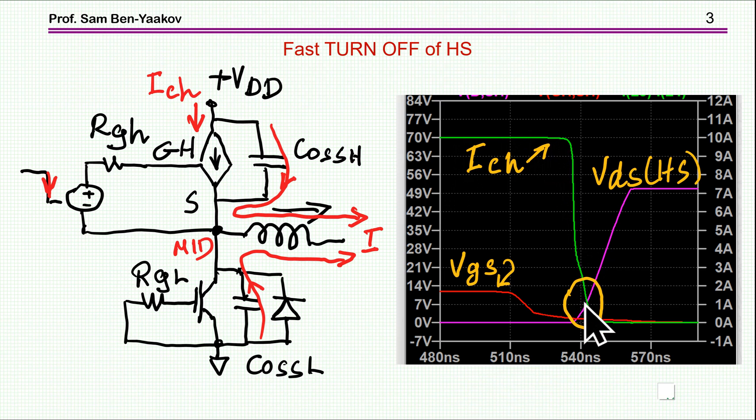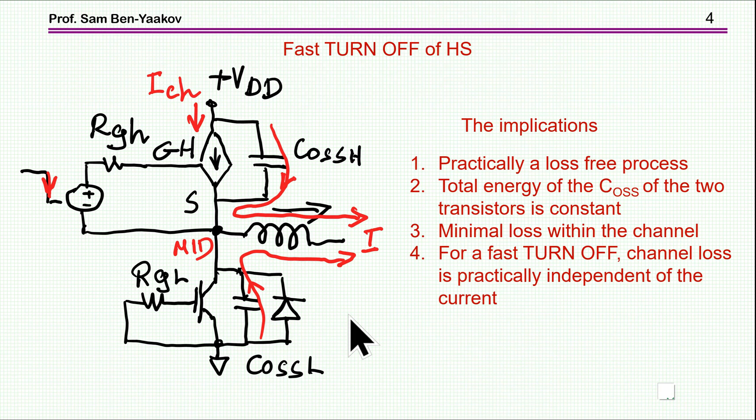This is the current of the channel itself and the rise of the voltage across the transistor depends on the current and the capacitance. It is slowed down because of the capacitance and consequently the overlap between the current and the voltage of the channel is minimum. So what are the implications here?